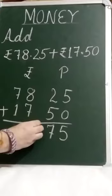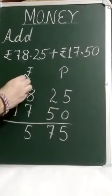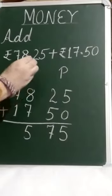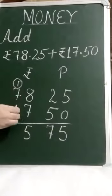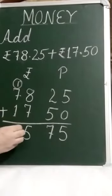8 plus 7 is equal to 15, 1 carry over. Then 7 plus 1 is 8, 8 plus 1 is 9.